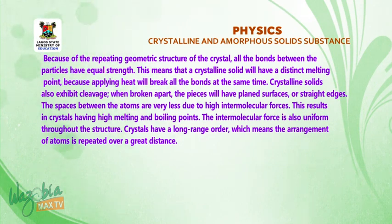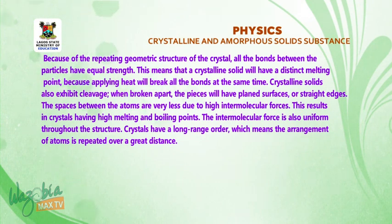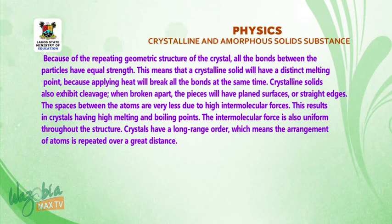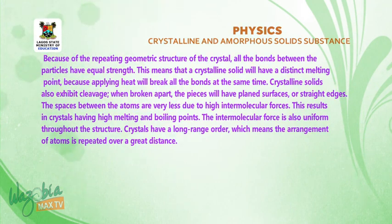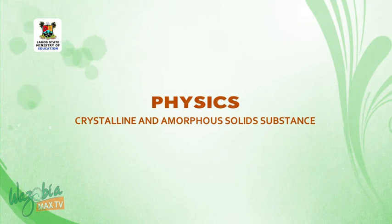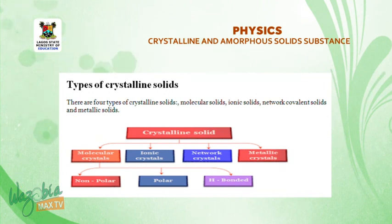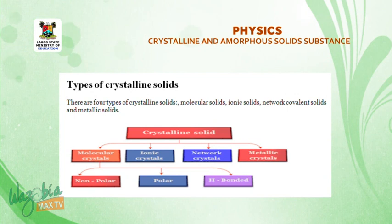Crystalline solids exhibit cleavage — when broken apart, the pieces will have plain surfaces or straight edges. The space between atoms is very small due to intermolecular force. Crystals have a long-range order, which means the arrangement of atoms is repeated over a great distance. Now let's look at the types of crystalline solids.